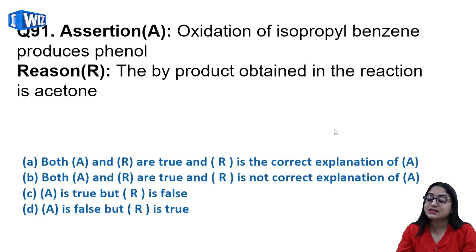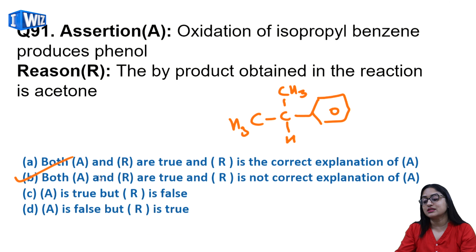Next: oxidation of isopropyl benzene produces phenol. Oxidation of isopropyl benzene gives you phenol - yes, this is cumene and this is one of the best methods for commercial preparation of phenol. The byproduct obtained is acetone - yes. Both statements are correct but reason is not correct explanation of assertion.